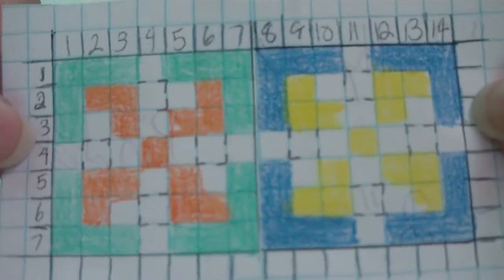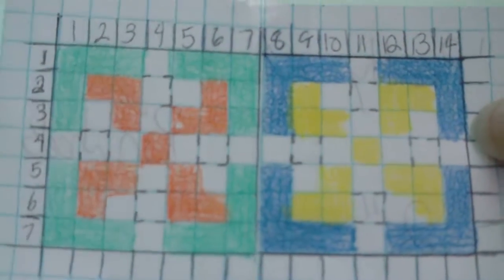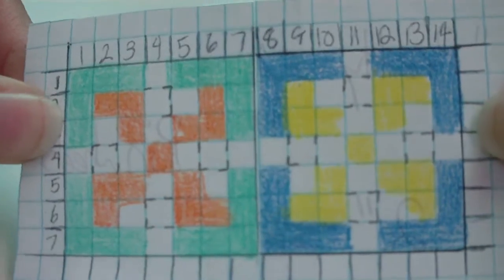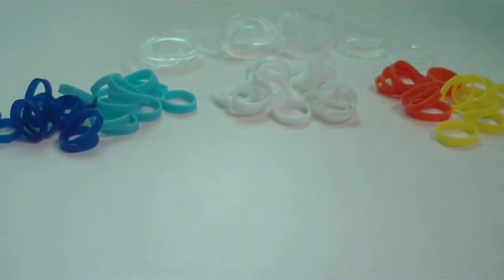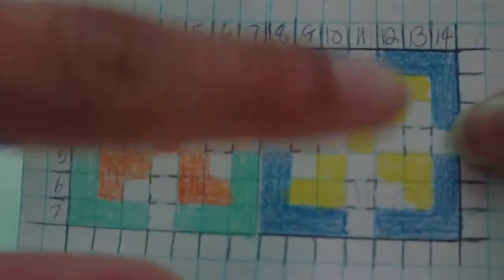You would just start over through the template and keep repeating it until you make the design long enough. Keep repeating until you make the design the length you need it to be.